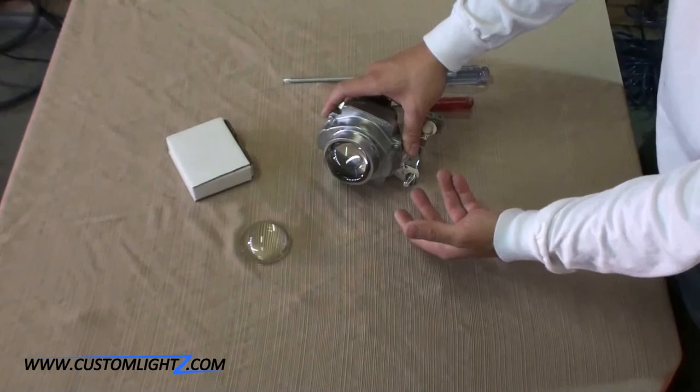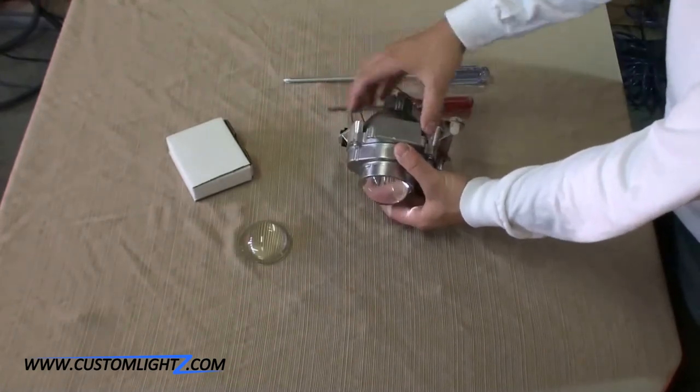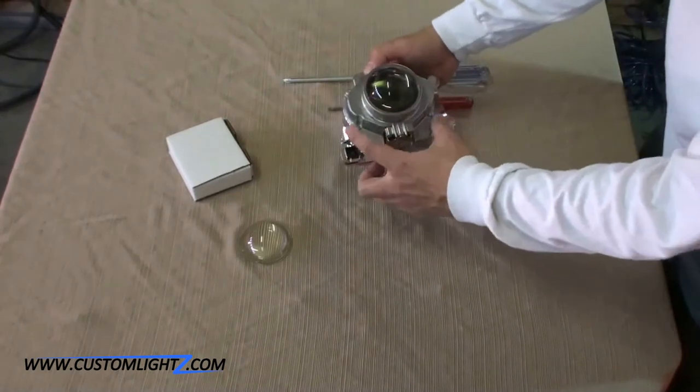So you need to fine tune it a little bit. And in order to do so, you need to modify the shield. So next we're going to get to the shield by separating the back bowl from the front part of the projector, which is held in place by four screws.